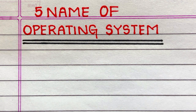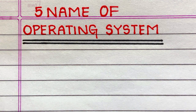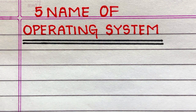Hello everyone, welcome to my channel. An operating system is a program that acts as an interface between the computer or mobile user and hardware, and controls the execution of programs. In this video, I will write five names of operating systems.